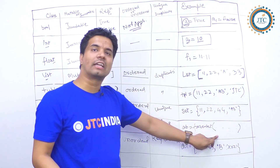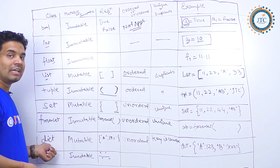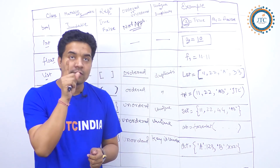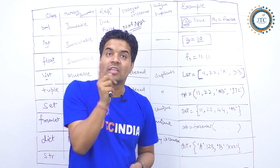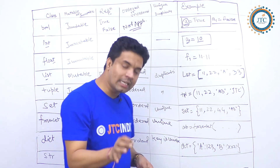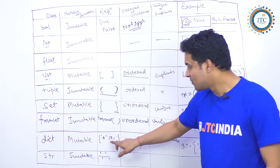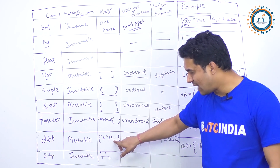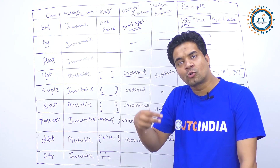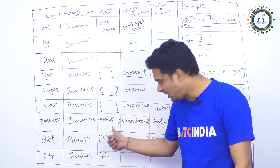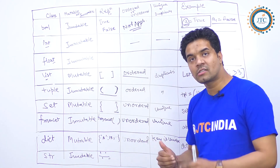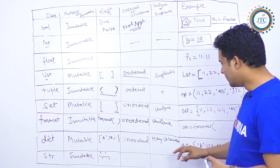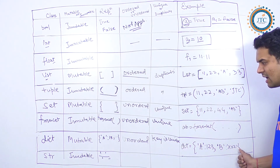Dictionary is mutable and stores elements in the form of key-value pairs. The key cannot be duplicated. You represent it using curly braces with a colon separating key and value. Both the key type and value type can be of any type. Dictionary is unordered — the order in which you add elements may differ from what is shown. Keys are unique.